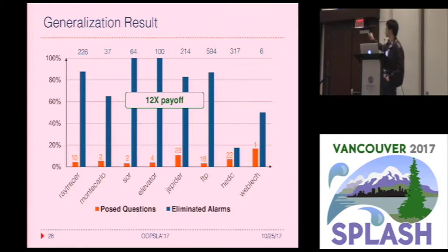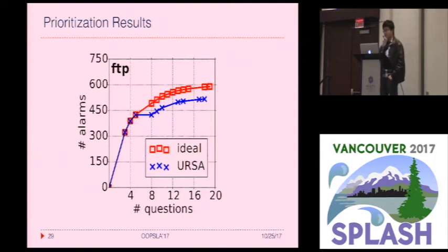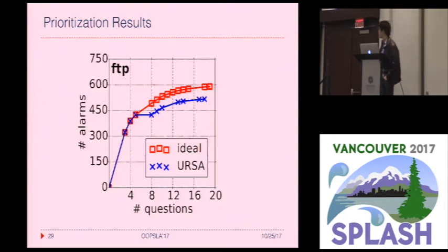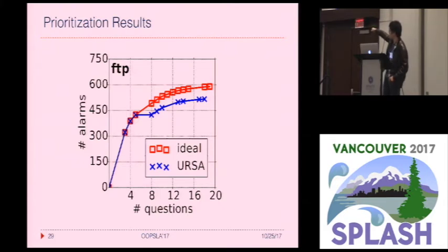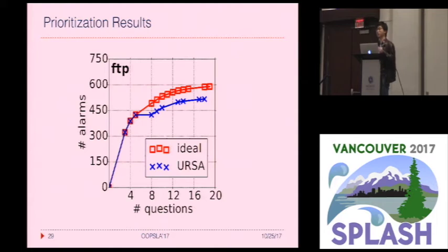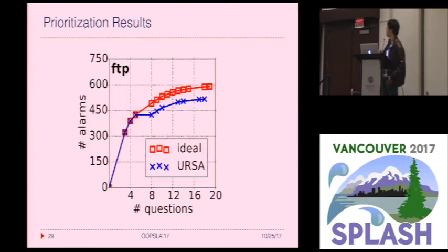Note that WUSA doesn't resolve all alarms for each benchmark because we stop interaction when the payoff drops to one. Looking at the prioritization result, let's focus on the blue line, which represents the number of questions asked versus the number of alarms resolved in each iteration. There are two interesting observations: first, in the very first iteration, WUSA asks three questions to resolve around 300 alarms, showing that sometimes multiple questions are needed to resolve many alarms. Second, as the interaction proceeds, the payoff gradually reduces — showing that WUSA is very effective in prioritizing questions with higher payoffs.